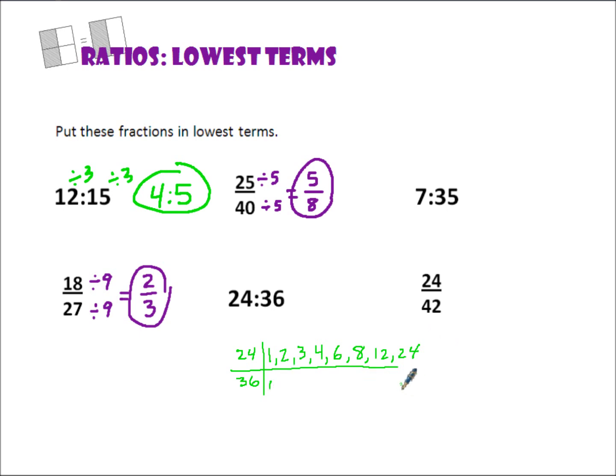36 is 1, 36. 2 will work because it's even. So, 2 and 18, 3 and 12,